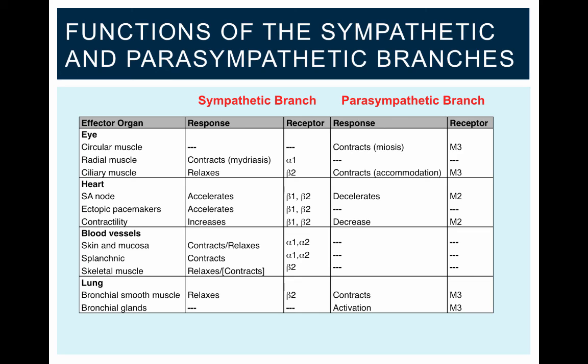So understanding this allows us to understand that drugs that work against the alpha-1 receptor, as an agonist or an antagonist, are going to alter the contraction of the radial muscle in the eye or alter constriction of blood vessels.